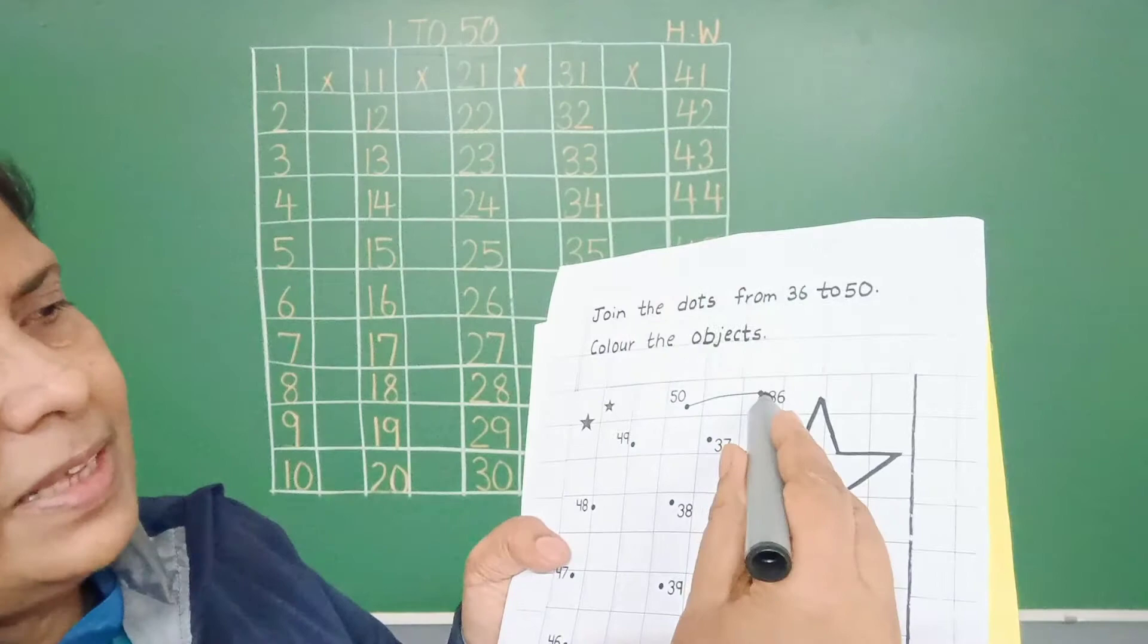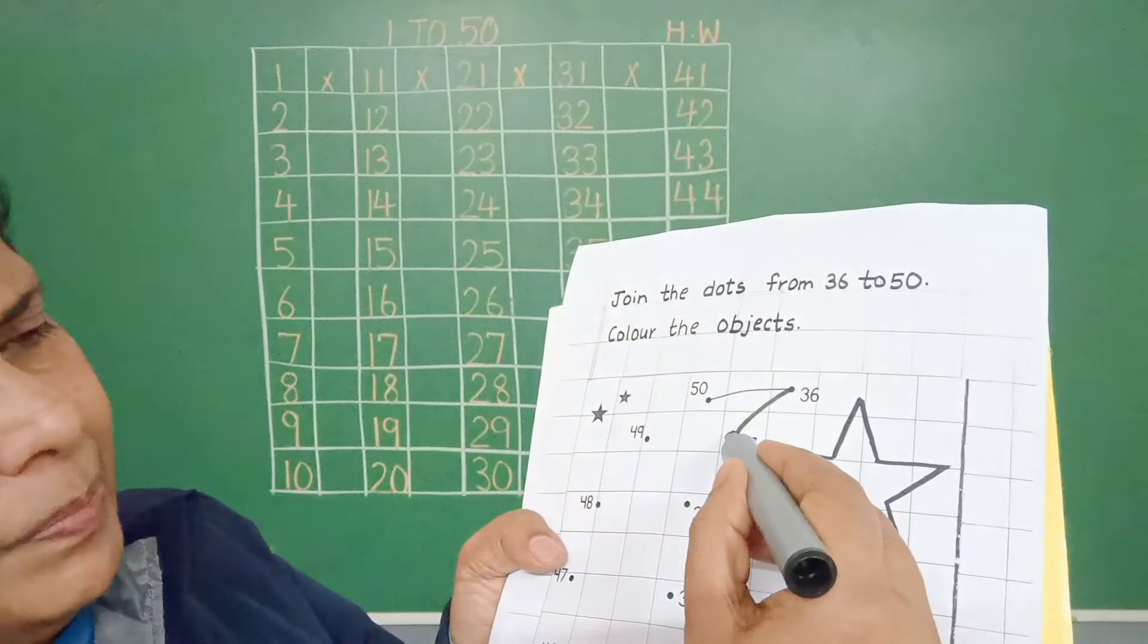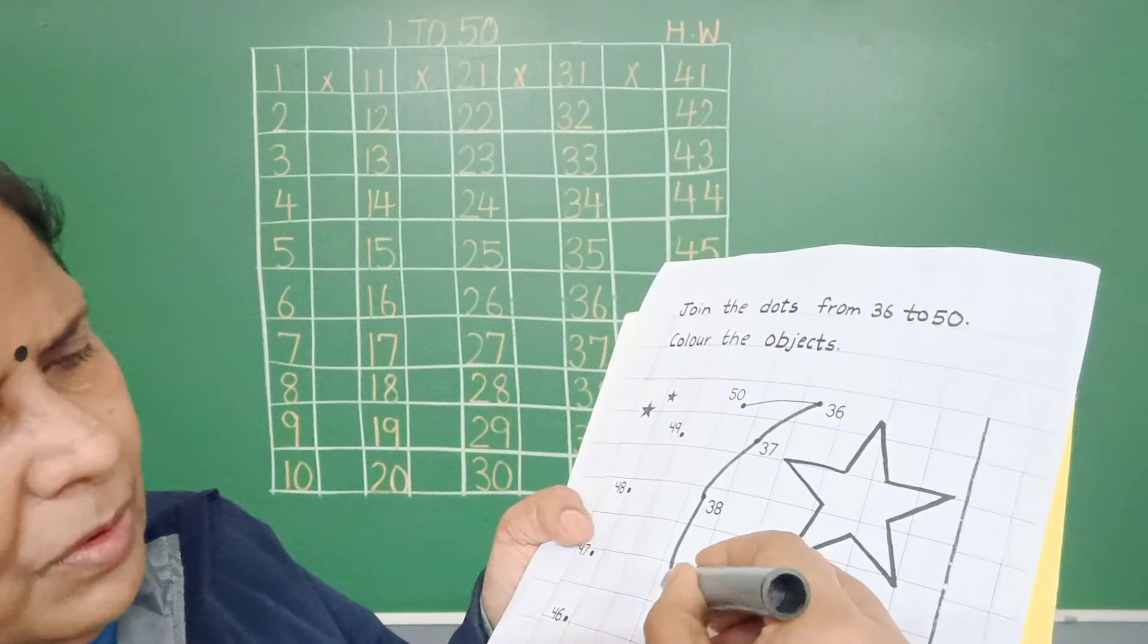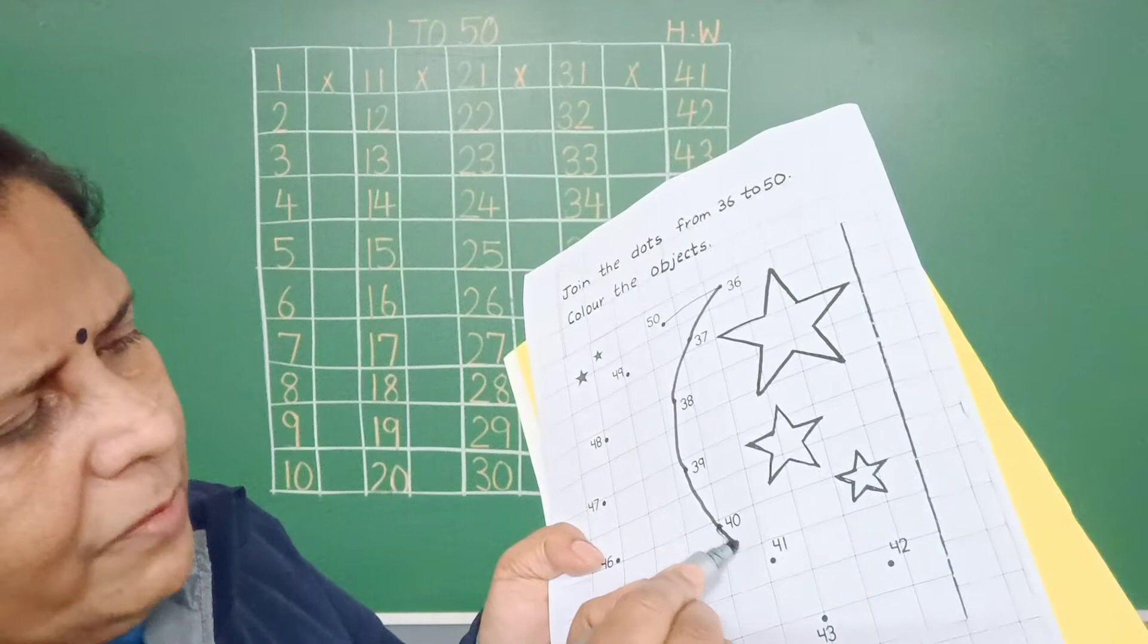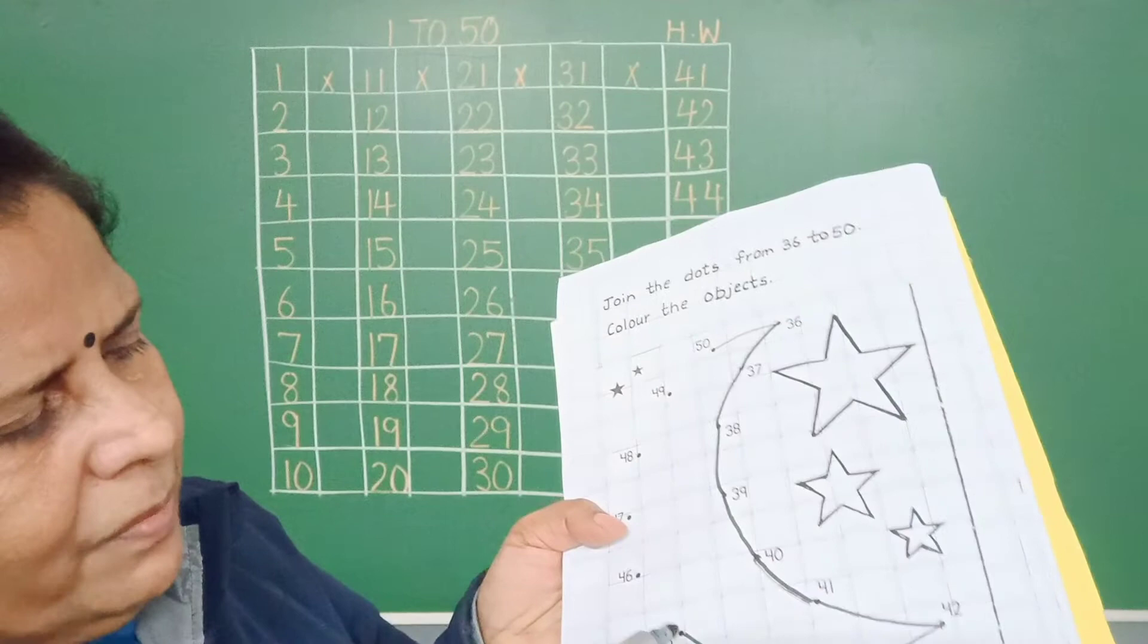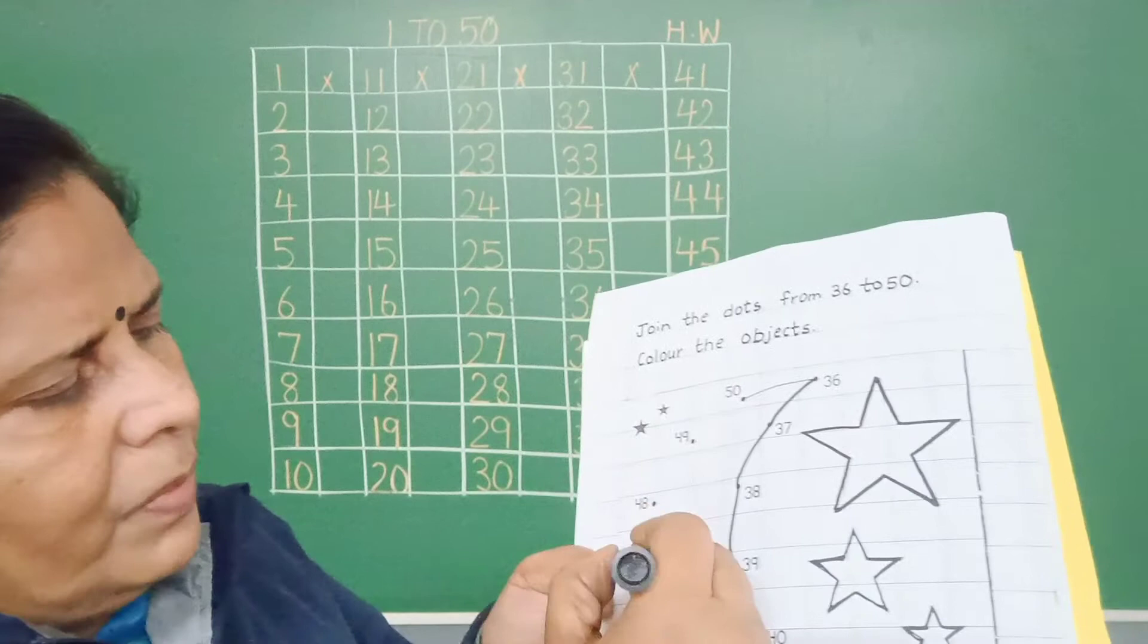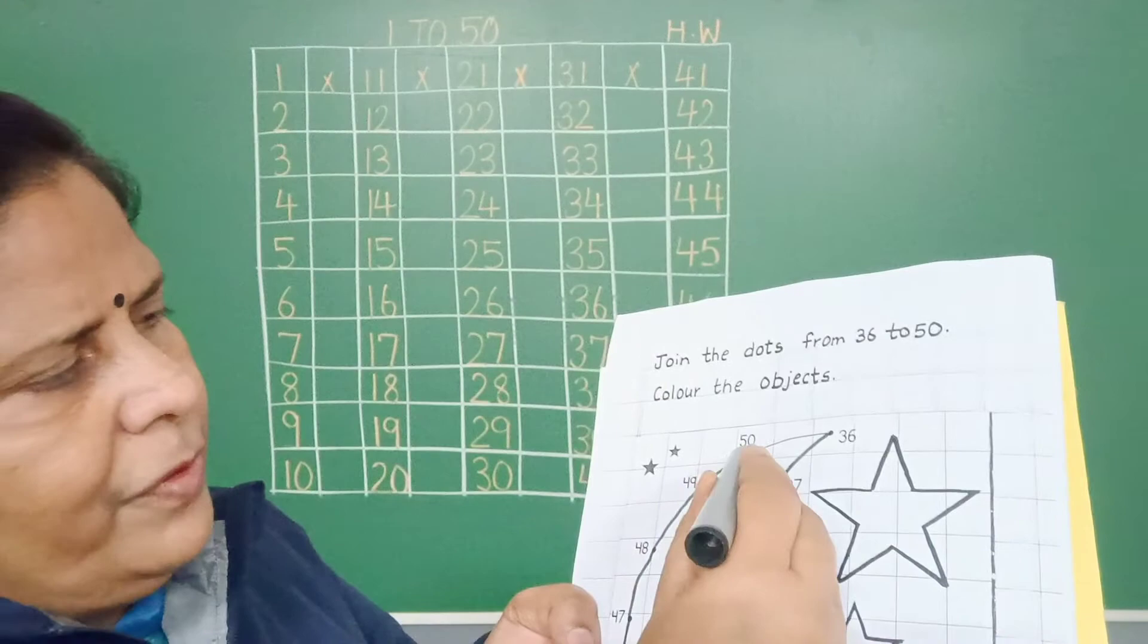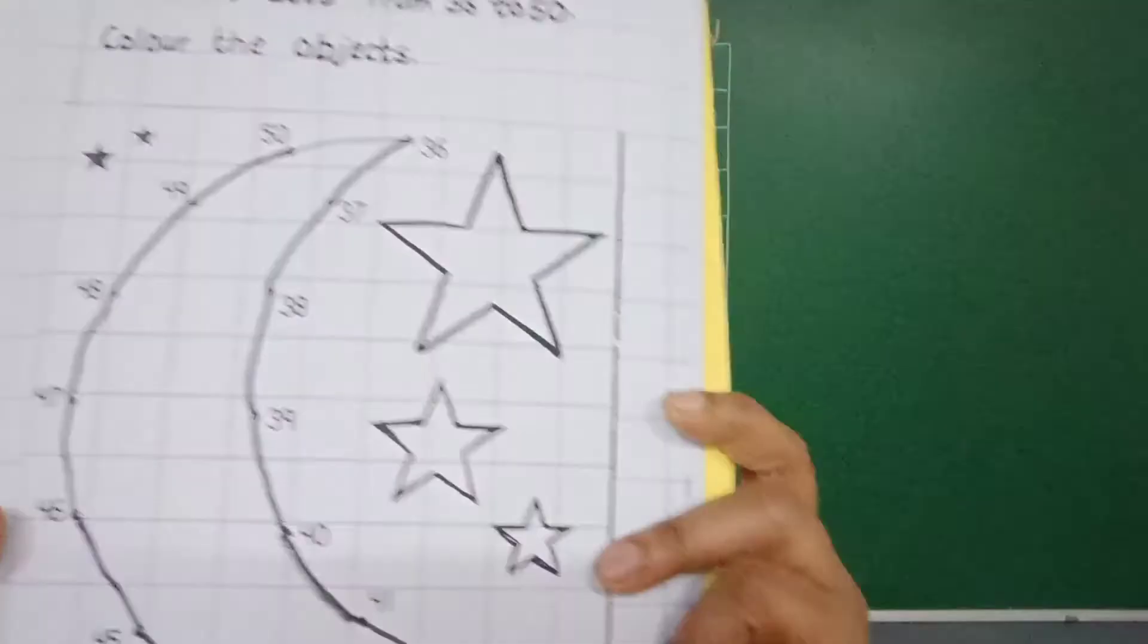Here, number 36 is there. You will join number 36 with 37, 38, 39, 40, 41, 42, 43, 44, 45, 46, 47, 48, 49, and 50.